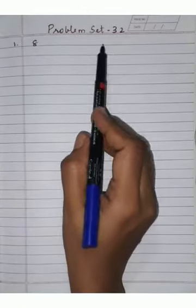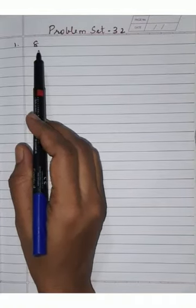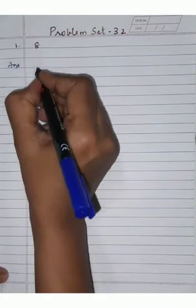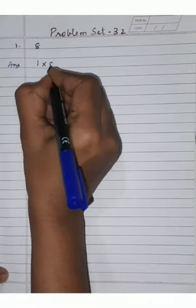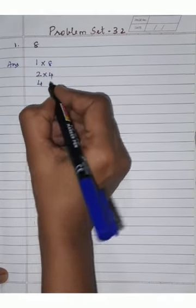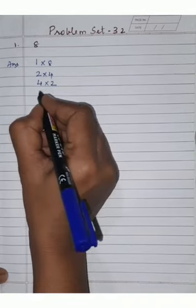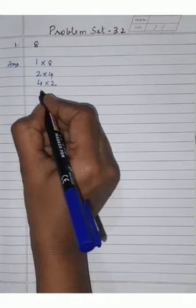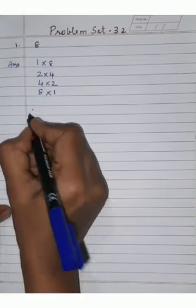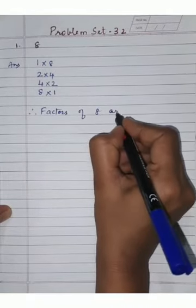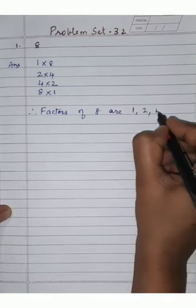Now let us start with Exercise 3.2. The first example is 8. We will write which tables 8 appears in: 1 × 8 = 8, 2 × 4 = 8. Three table is not coming. 4 × 2 = 8. Five, six, and seven tables are not coming. 8 × 1 = 8. Therefore, factors of 8 are 1, 2, 4, 8.